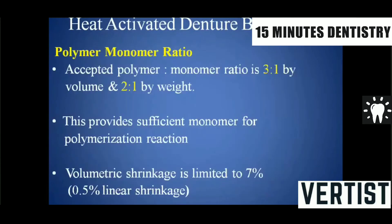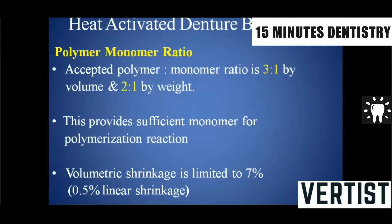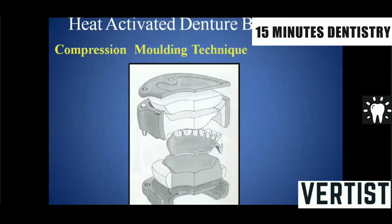The acceptable polymer-to-monomer ratio is 3:1 by volume and 2:1 by weight — a commonly asked MCQ point. This provides sufficient monomer for the polymerization reaction. The volumetric shrinkage of the polymerized resin is limited to 7%, with a linear shrinkage of 0.5%. Heat-activated denture base resin is processed using the compression molding technique.